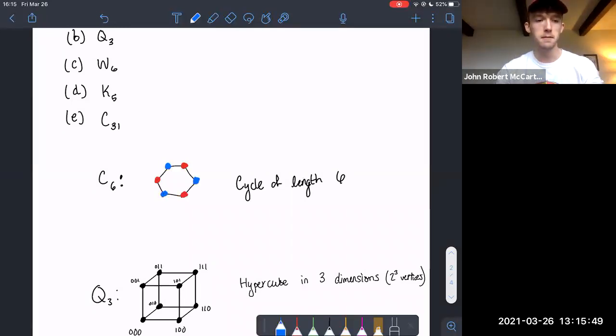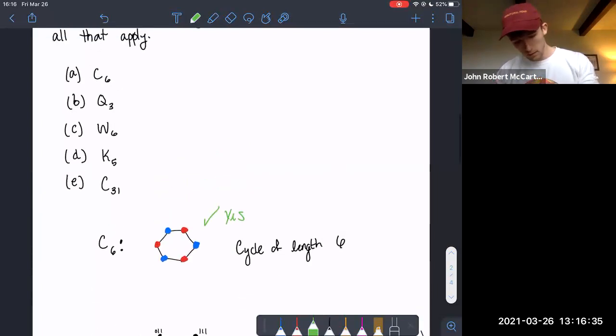And if we can do that without having any contradictions where we have a vertex that's neighbors with something of the same color, then we can say that it's bipartite. So we've two-colored this with no problems. So we can conclude that C sub 6 is bipartite. So this is a check mark. Yes. Another way that we can see this is notice that there's only one cycle in this graph. It's a cycle of length 6. Since 6 is an even number, we know that there are no odd cycles in this graph. So that's another way that we can arrive to the conclusion that this graph is bipartite.